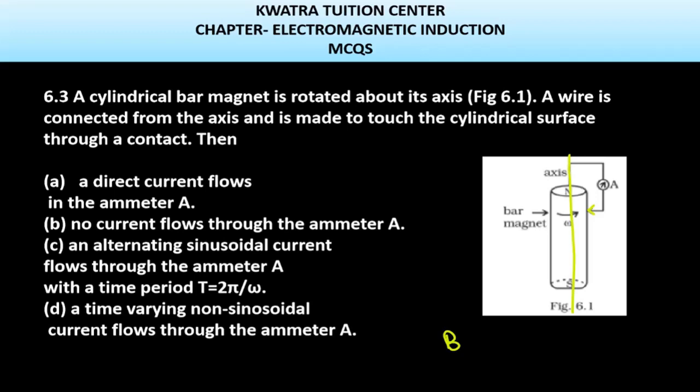Why? Because it is being rotated on an axis and it is symmetric. So this means that the magnetic field is the same throughout the motion. Then there won't be any current which is flowing through ammeter A.